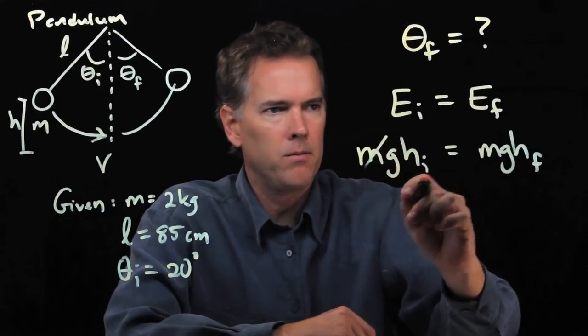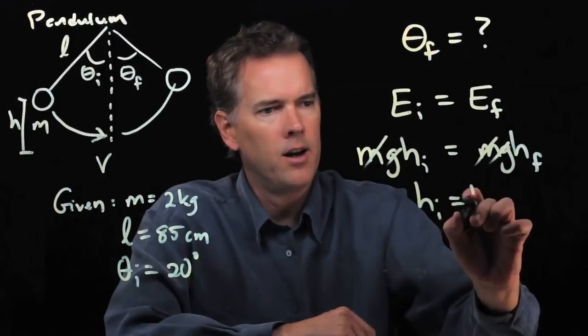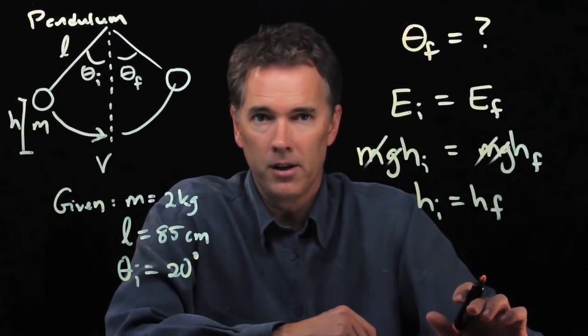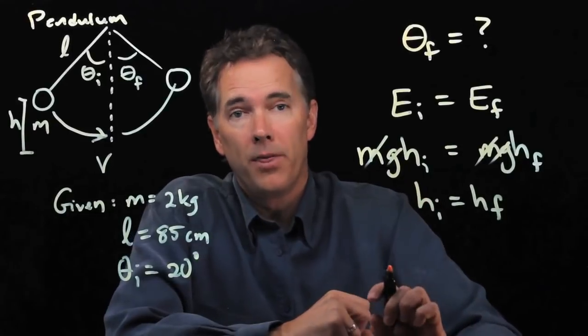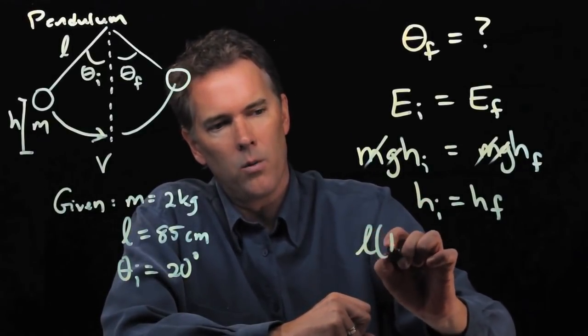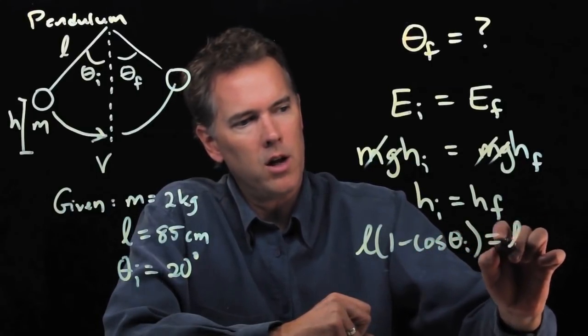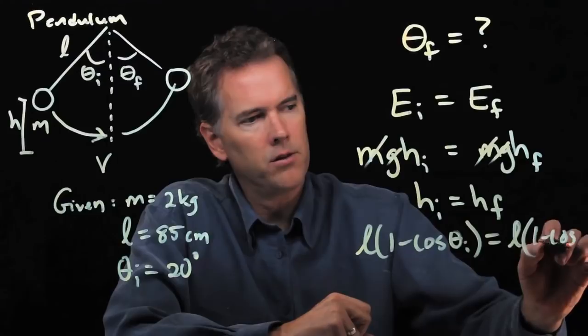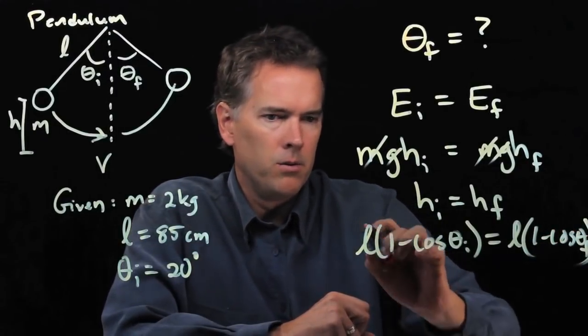But the m is the same, the g is the same, and so we have to have h initial is equal to h final. And if those heights are equal, we know what that is in terms of the angle. So, it is l times 1 minus cosine theta i equals l times 1 minus cosine theta f. And those things, if they're equal,